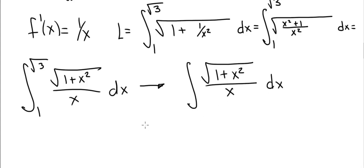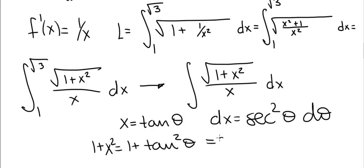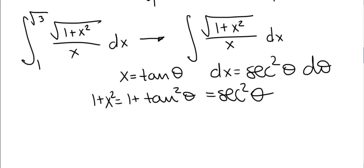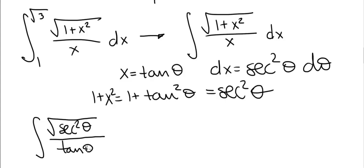We use trigonometric substitution: let x = tan(θ), so dx = sec²(θ) dθ. Then 1 + x² = 1 + tan²(θ) = sec²(θ). Returning to the integral and making the substitution, we have √(1 + x²) = √(sec²θ) divided by x = tan(θ), multiplied by dx = sec²(θ) dθ.